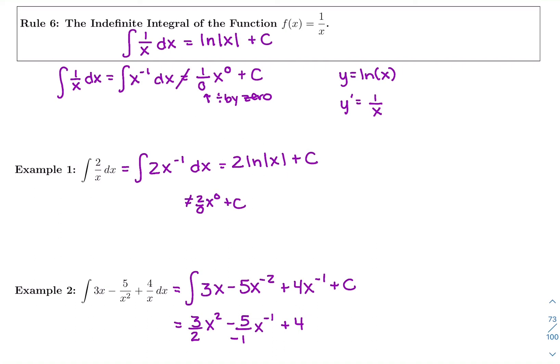So I'm going to switch gears. It is not 4 divided by 0, x to the 0. It is 4 ln of x plus c. So you continue to add 1 and divide by that new power, unless you get 0. Then it's the ln of x.